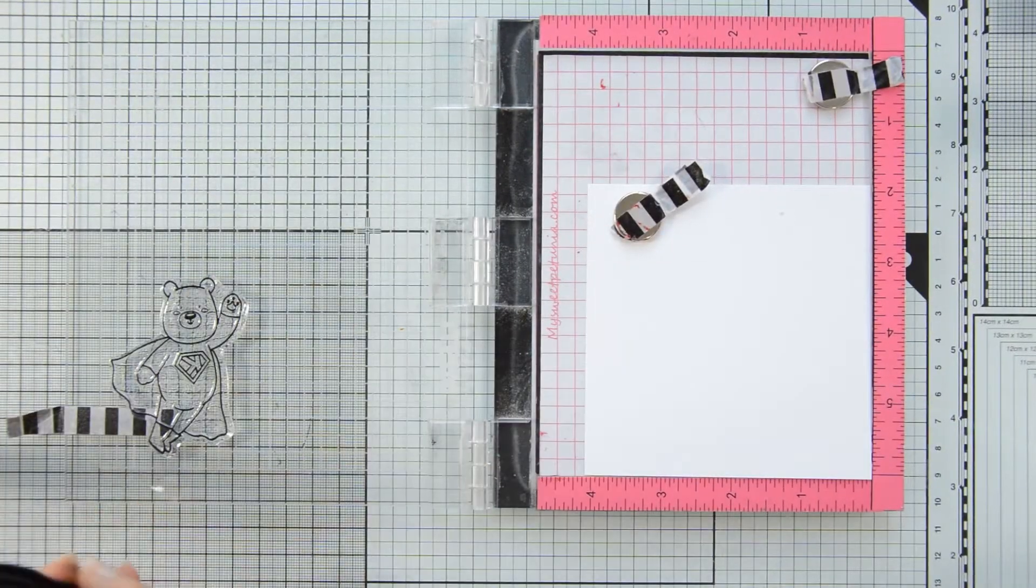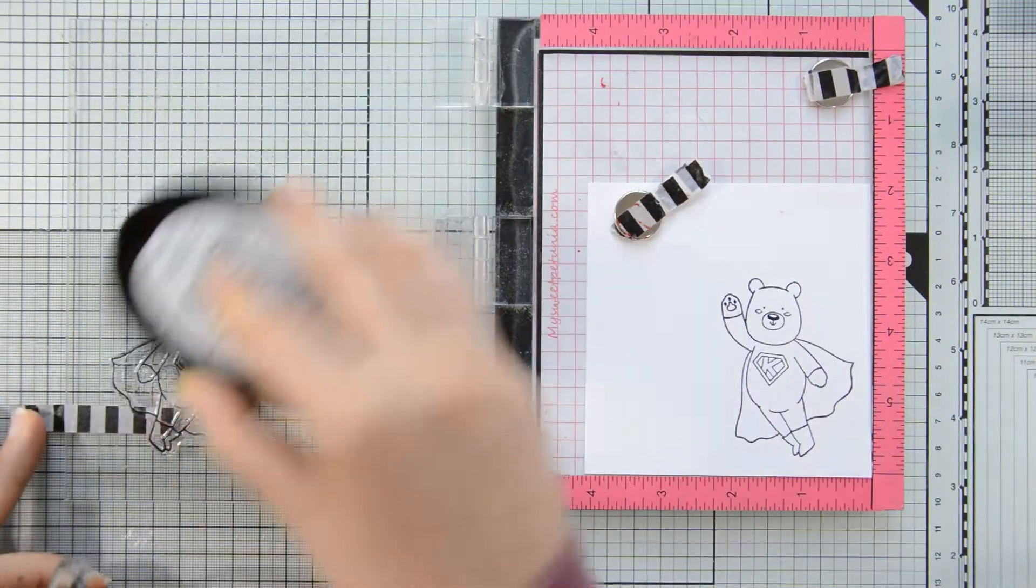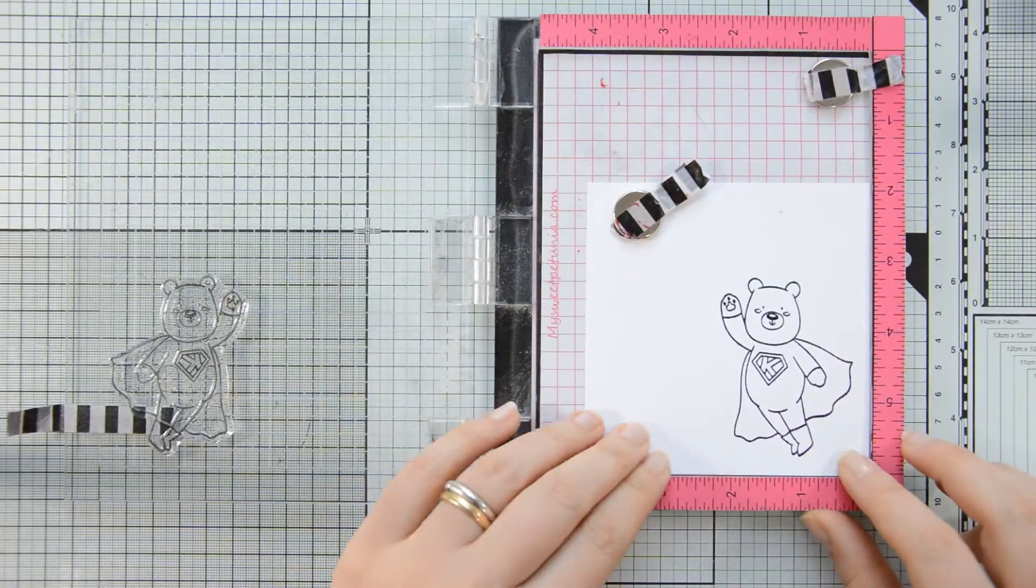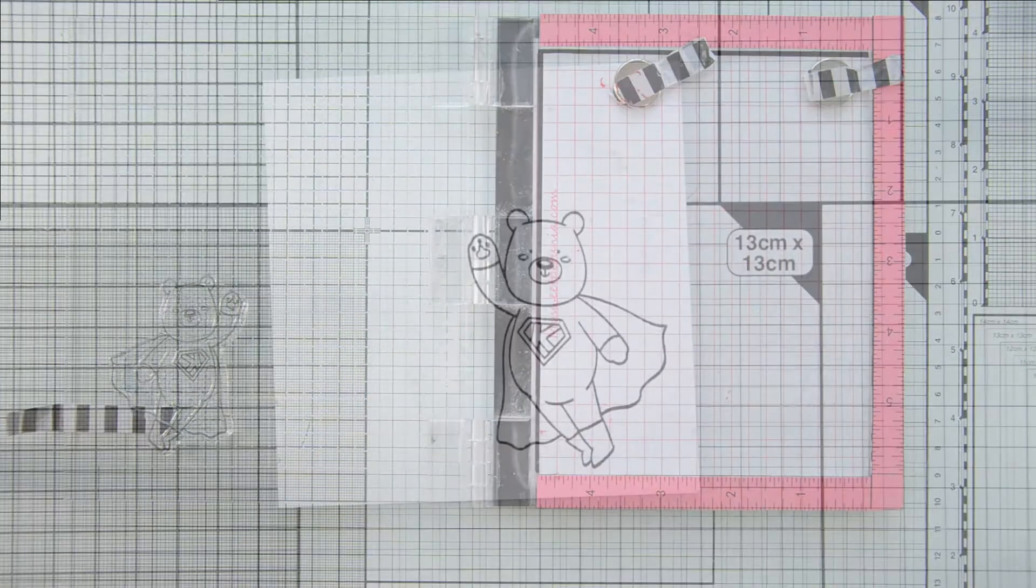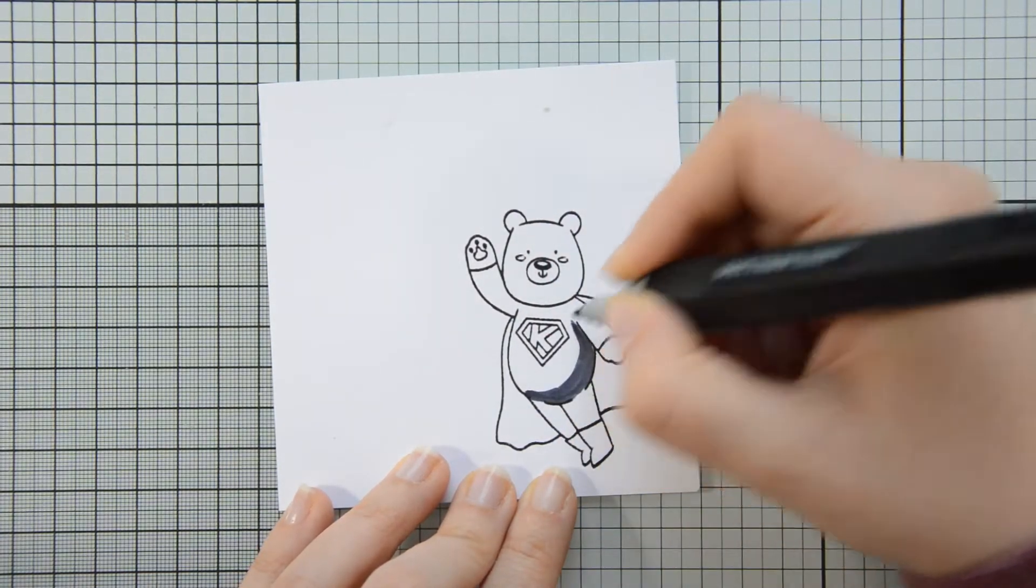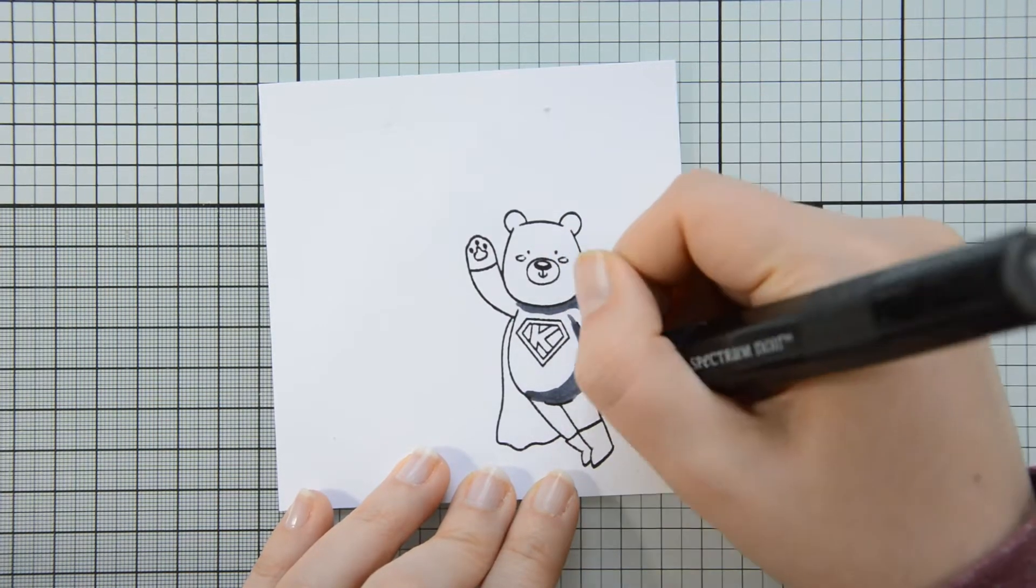As a first step, I started working on my image. This will be the focal point of today's card and is from the Kobe the Super Bear stamp set. I am stamping it with black hybrid ink on some Nina Solar White 110 lb cardstock and I will be coloring it with my Spectrum Norm markers.